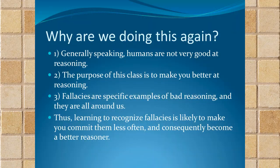Before we start, I want to provide my own argument for the importance of doing this. As a professor asking you to assess your own reasoning and the reasoning of others, I should give you my own justification for why we're here. I'd present a three-premise argument: first, generally speaking, humans aren't very good at reasoning naturally — that includes me, you, and everyone else. We need other people to help remind us that we're biased, which is actually one point of peer review in science.